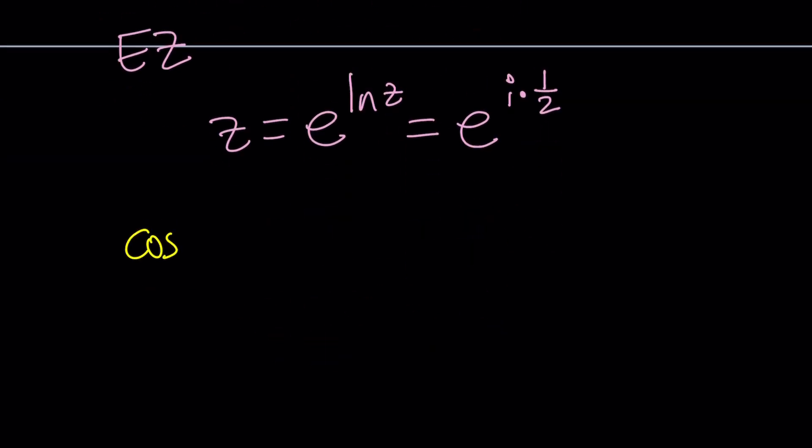And what did Euler say? Euler said e to the power i θ equals cosine θ plus i times sine θ. Therefore,